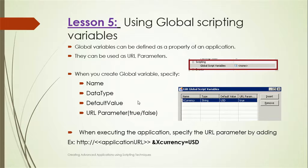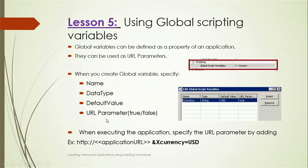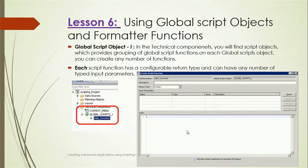Coming to Lesson 5: Using Global Scripting Variables. Global variables can be defined as a property of an application and can be used as URL parameters — for example, to pass variables from one part of an application to another via URL. When creating a global variable, you specify the name, type (string, number, etc.), default value, and whether it is a URL parameter. In a URL it looks like: http://...&variableName=value.